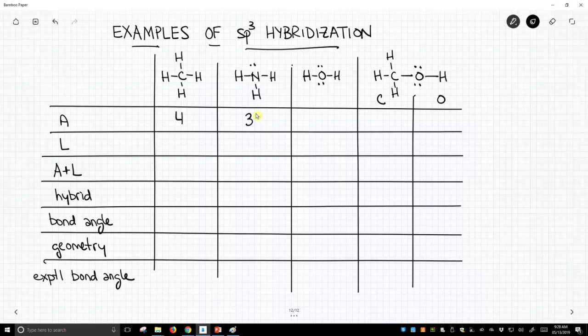Continuing across, this is water, H2O. Water, the oxygen, has two attached atoms, and then we have a more complex molecule. This last molecule is methanol. The carbon has four attached atoms, and the oxygen has two.